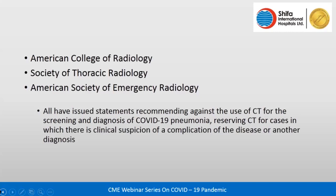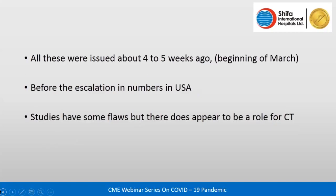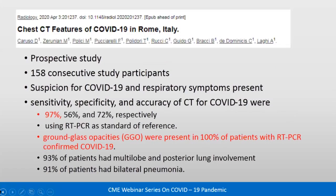Since the infection spread further in Europe and the US, more studies have emerged. An Italian prospective study of 158 consecutive patients with respiratory symptoms reported CT sensitivity of 97 percent for COVID-19 with PCR as the reference standard. Ground-glass opacities were present in 100 percent of PCR-confirmed COVID-19 patients. The specificity remains low due to overlap with other infections. More recent guidelines from the European Society of Radiology now favor CT to some extent, stating that despite non-specific findings, the specific nature of this pandemic makes imaging a good tool to stratify patients in first-line clinical triage.